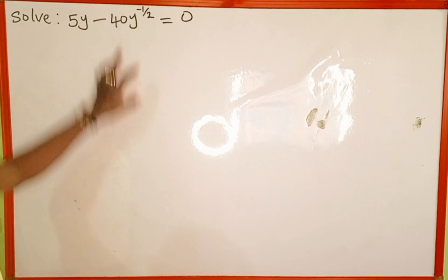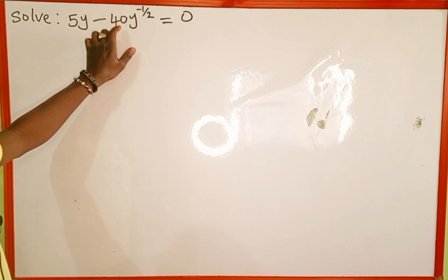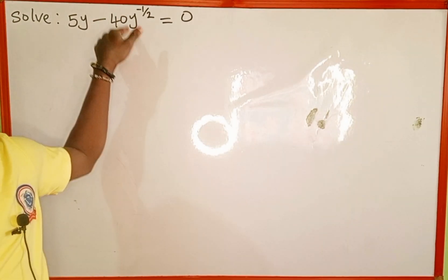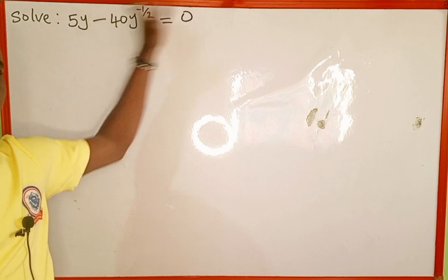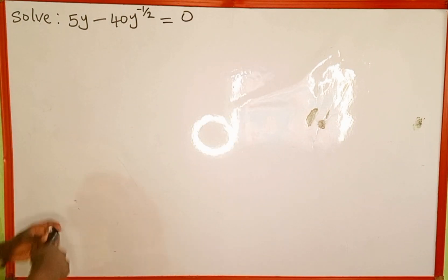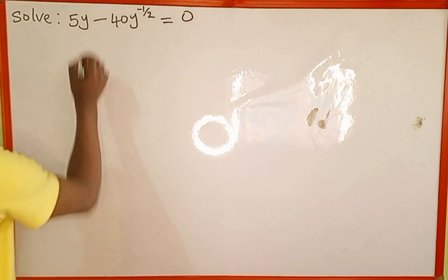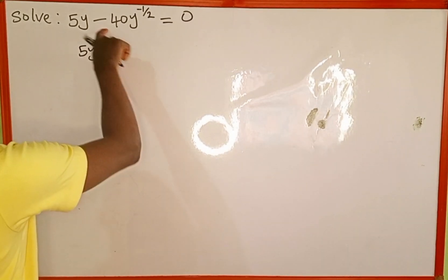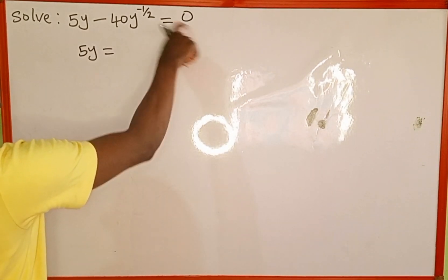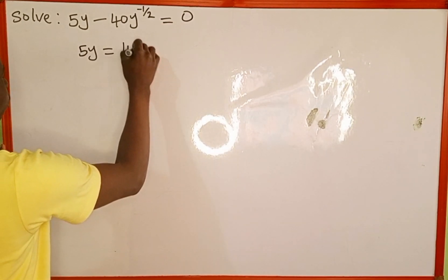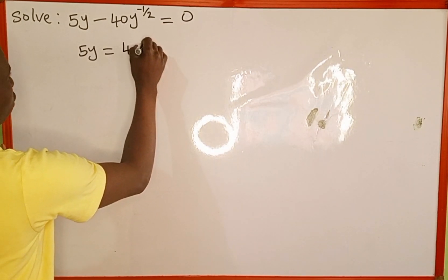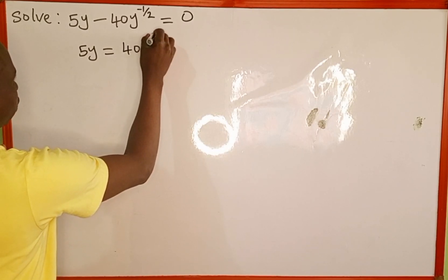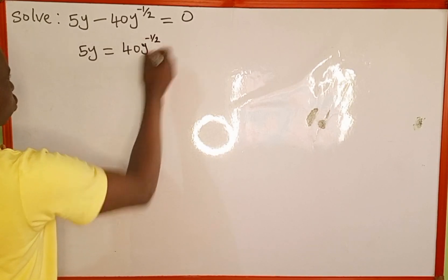To solve for the value of y, the first thing we're going to do is to take this negative 40y to the power of negative half to the right side of this equation. So 5y is equal to — when the negative crosses the equality sign it's going to change to positive — 40y raised to the power of negative 1 over 2.